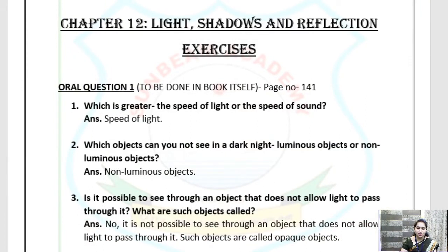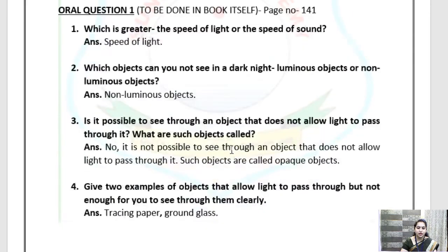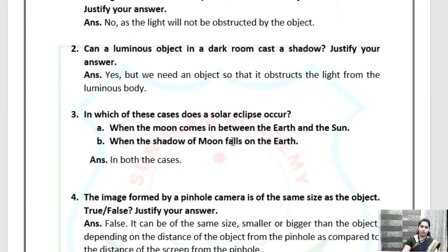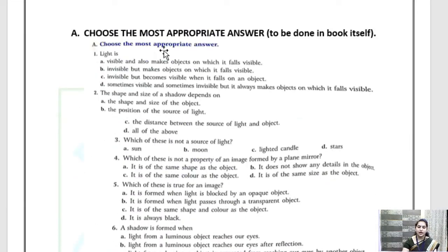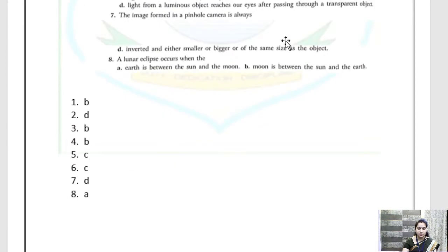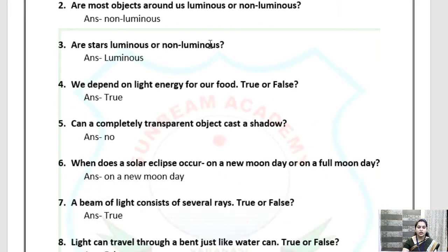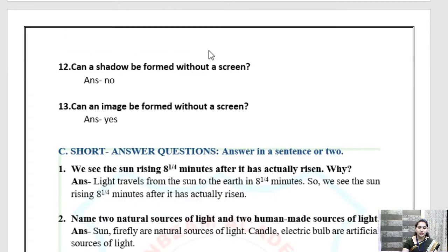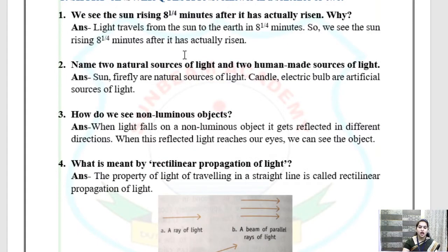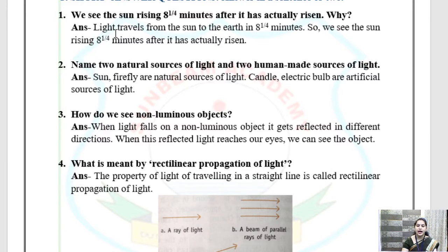Chapter 12: Light, Shadows and Reflection. We have done oral questions 1 and 2, and we have done the 'choose the most appropriate answer' section. So let's quickly start with short answer questions. Children, you will write these in your fair notebook — questions with black pen and answers with blue pen. Please write very neatly.